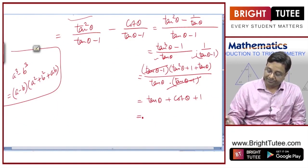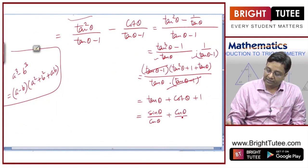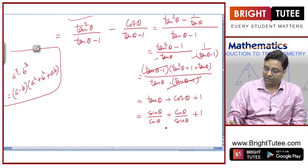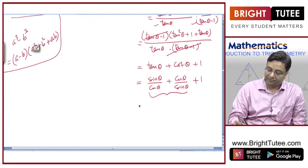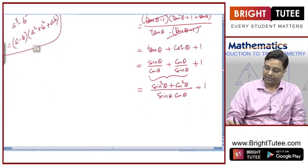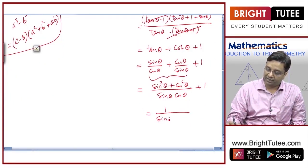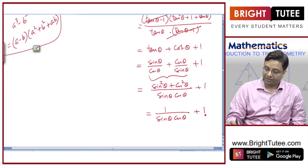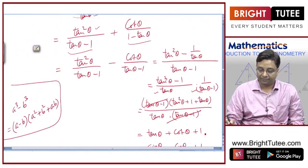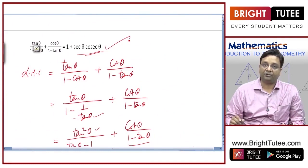Writing tanθ as sinθ/cosθ and cotθ as cosθ/sinθ, the LCM is sinθcosθ. The numerator becomes sin²θ + cos²θ + sinθcosθ, which equals 1 + sinθcosθ, all divided by sinθcosθ. This gives 1/(sinθcosθ) + 1 = cosecθ·secθ + 1, which is the required right-hand side. Hence proved.